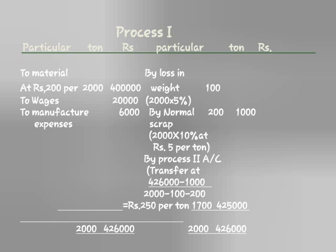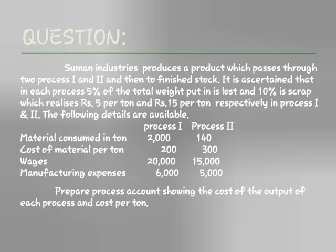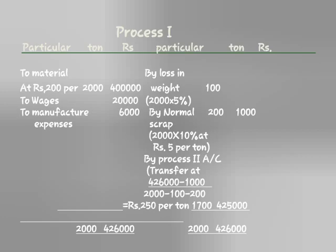Normal scrap: 10% of 2,000 is 200 units, scrap value at Rs. 5 per unit. Transfer to Process 2 account: 1,500 units at Rs. 4,25,000.